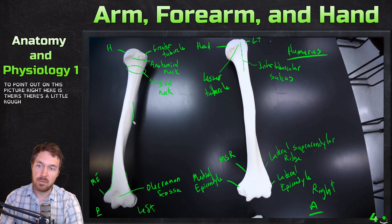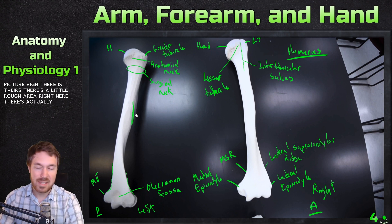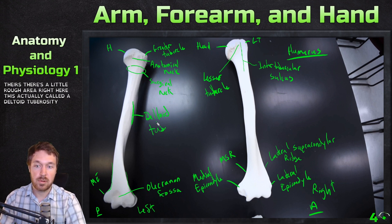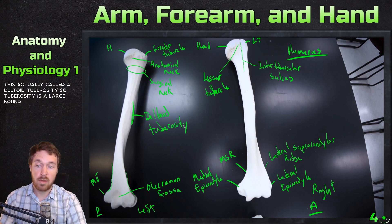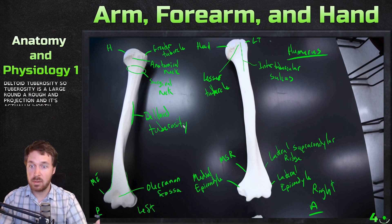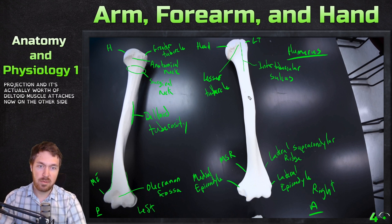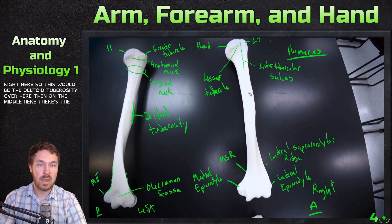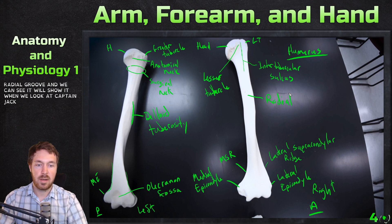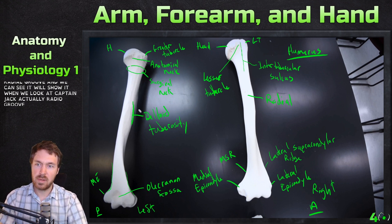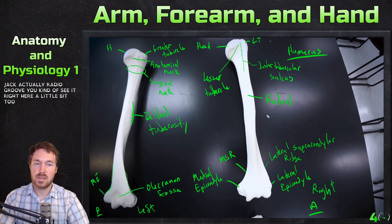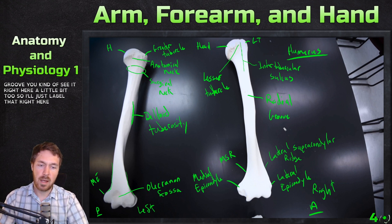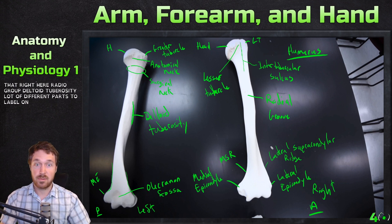There's a rough area on the shaft called the deltoid tuberosity — a tuberosity is a large rounded roughened projection, and this is where the deltoid muscle attaches. On the middle of the shaft there's also the radial groove. So we have the radial groove and deltoid tuberosity — lots of different parts to label on the humerus and we're not even done yet.